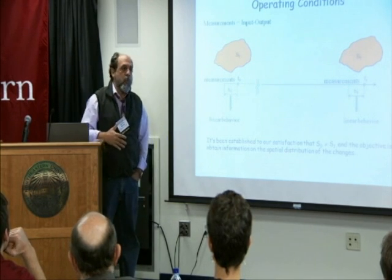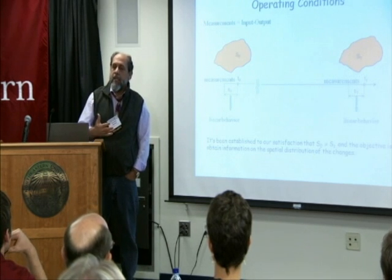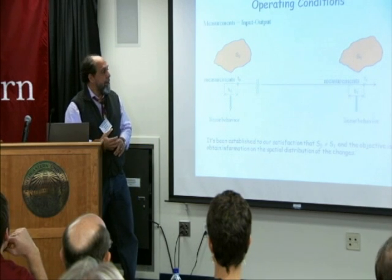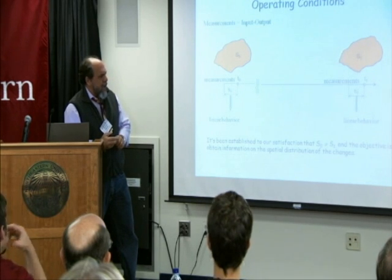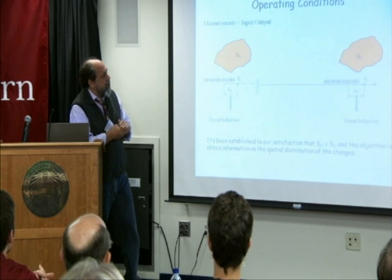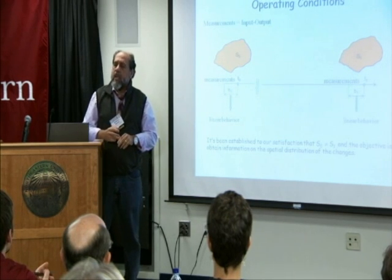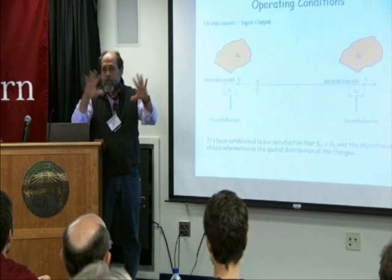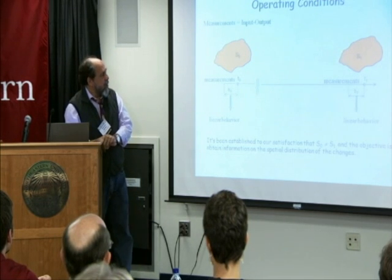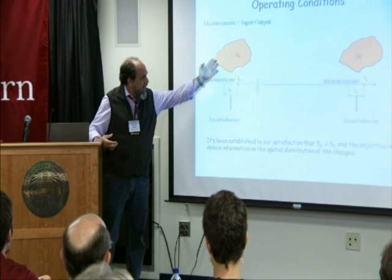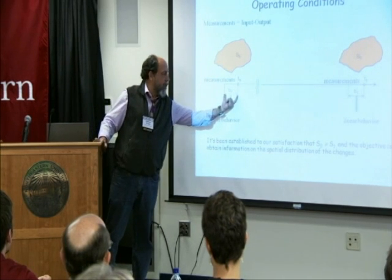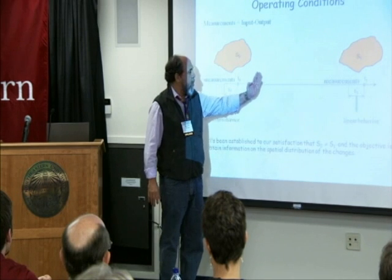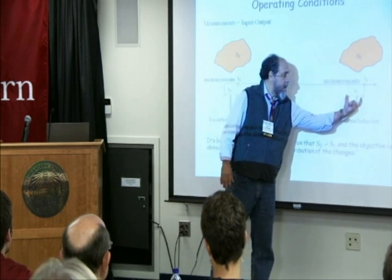I'm going to provide just enough of an outline so you can appreciate the angle we are looking at in finding this. The presentation in the next slides gives you the idea of the strategy as general theoretical background. We're assuming we have some sort of a structure for which we are able to collect data over some period of time. Then time has elapsed and for whatever reason — overloading, aging, or whatever — something has changed and we are taking data at another time.